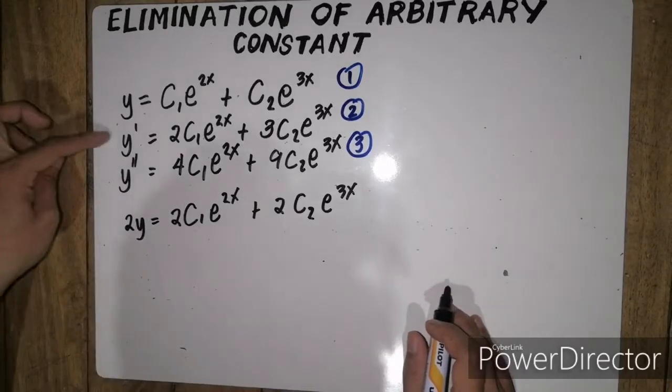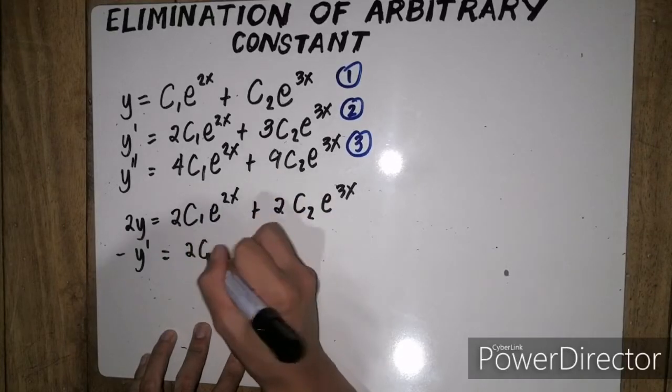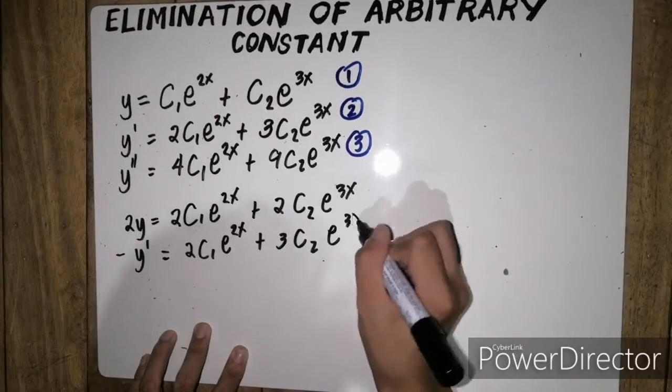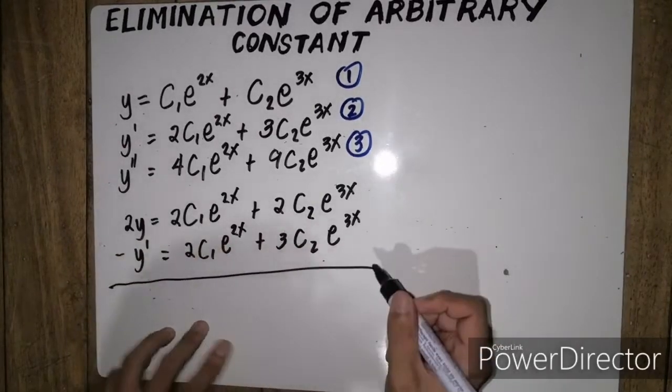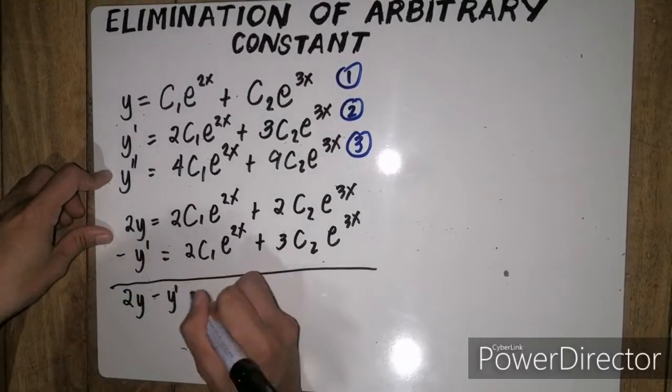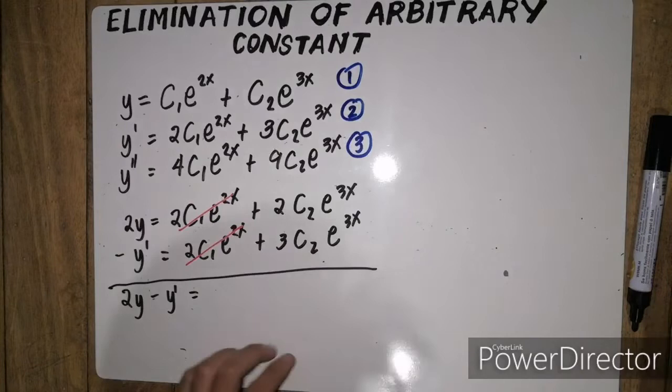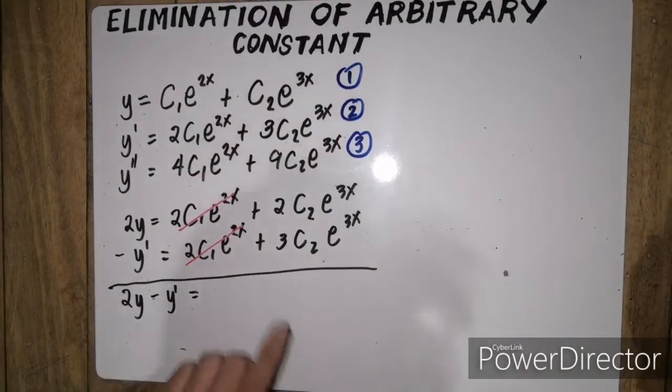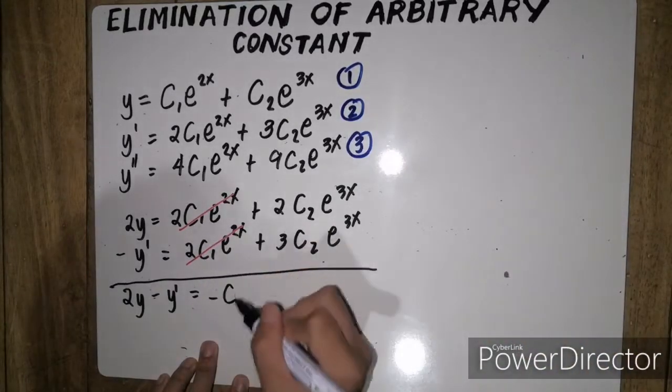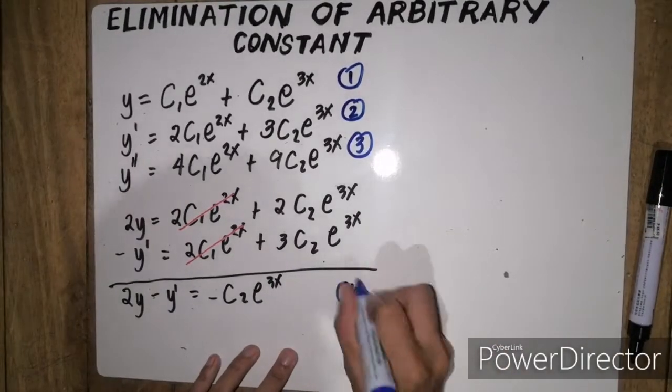And then, i-minus ko siya kay second equation. So we have, minus y prime equals 2 c1e to the 2x plus 3 c2e to the 3x. Pag-minus ko ito, so we have 2y minus y prime equals, cancelled out na ito. 2 c2e to the 3x minus 3 c2e to the 3x is simply negative c2e to the 3x. So this will serve as our fourth equation.